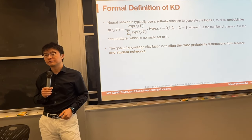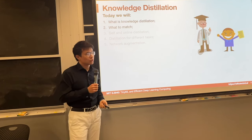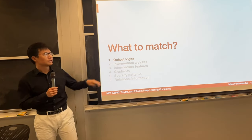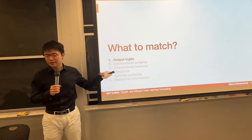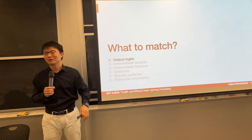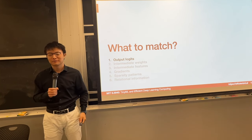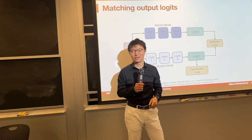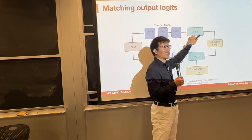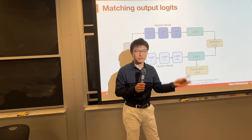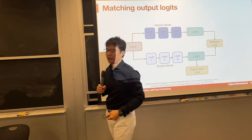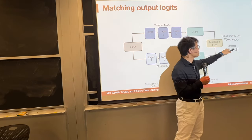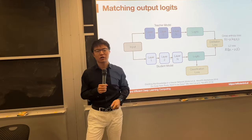There are several different choices for what to match: the output logits, intermediate weights, intermediate features, gradients, sparsity patterns, and relational information. The simplest and most widely used is matching the logits — using the cat-and-dog example, the last layer's output is 5 and 1, and we directly try to match that. We can use cross entropy loss or L2 loss to match the teacher's logit and student's logit.